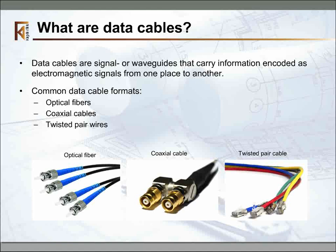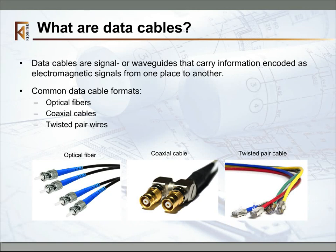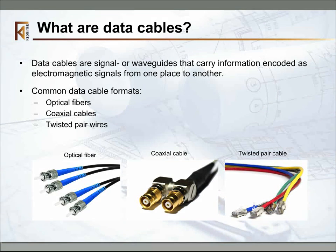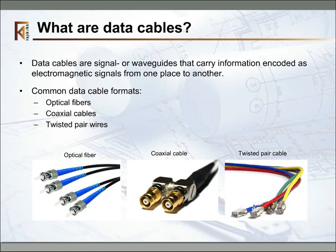Data cables are devices that carry our precious information signals from wherever we are to wherever we want them to go. When we talk about an information transmission medium that is shared amongst many users, like a network, we can divide that space by time — take turns transmitting, sending out data only when no one else is using the channel. We can divide it by frequency, letting everyone send at the same time but giving everybody a separate frequency band, much like radio and television today. We can code the information, letting everyone send all at the same time over the same frequencies, but arranging the data so that only one receiver can decode what was sent.